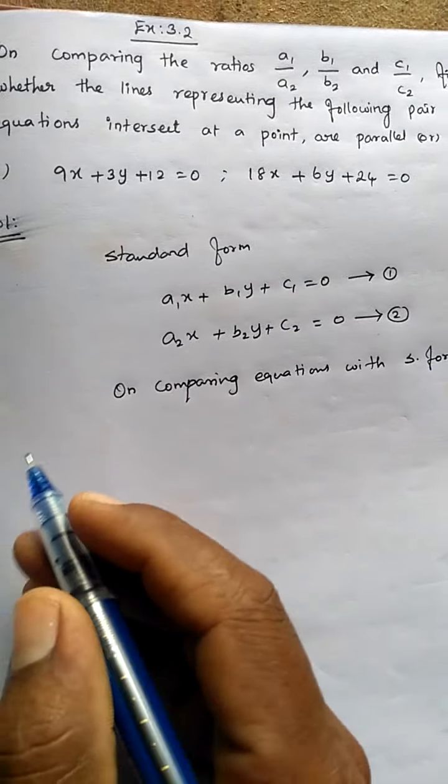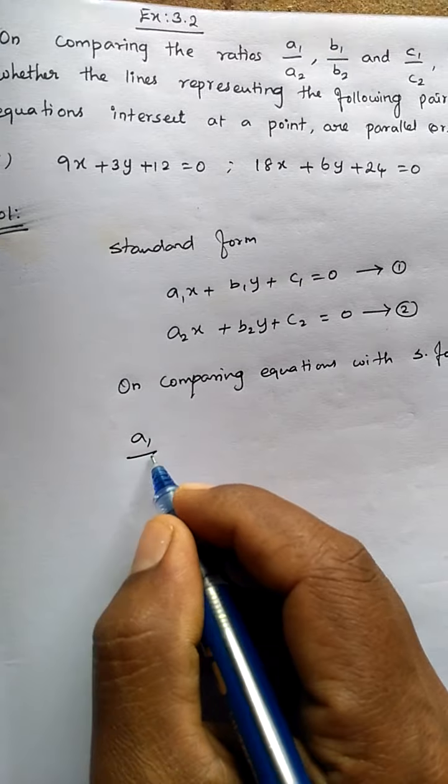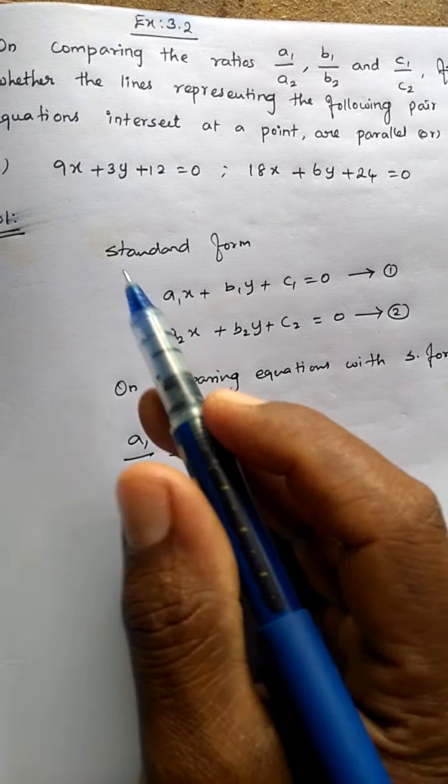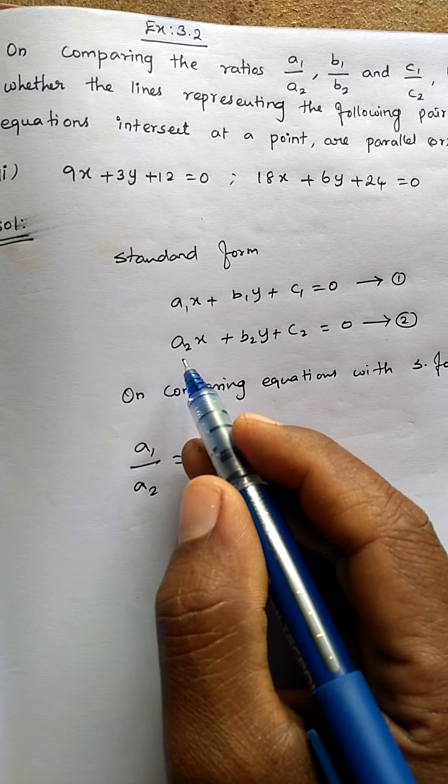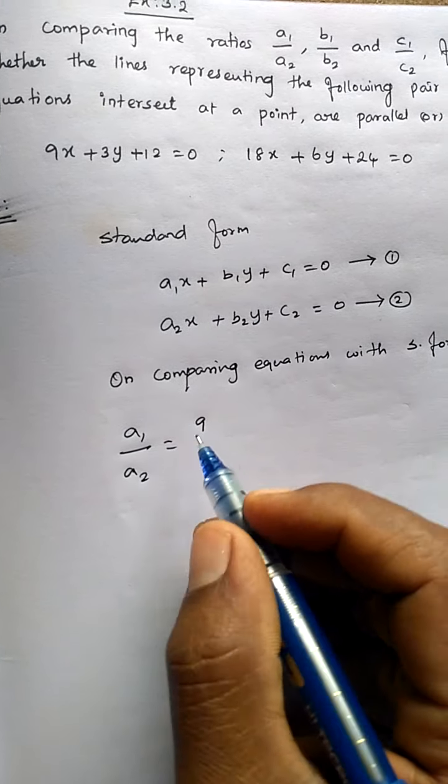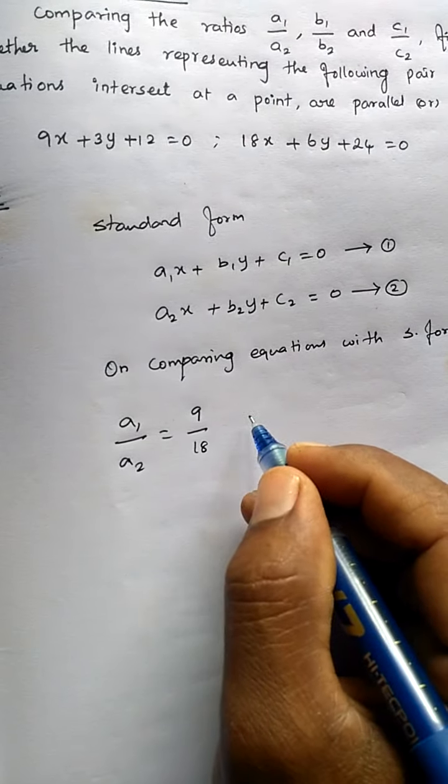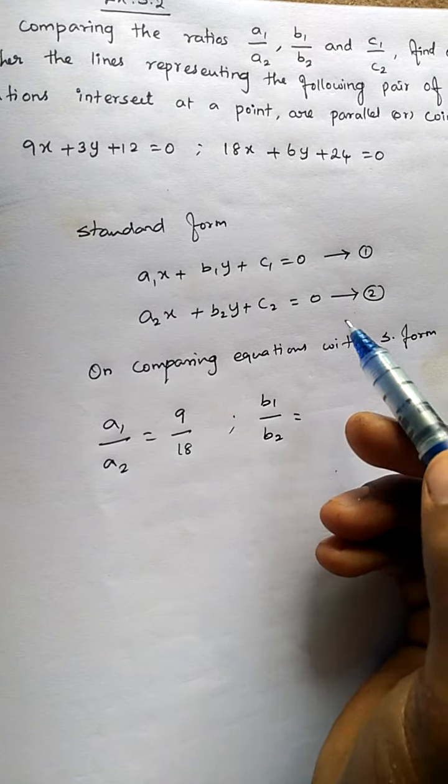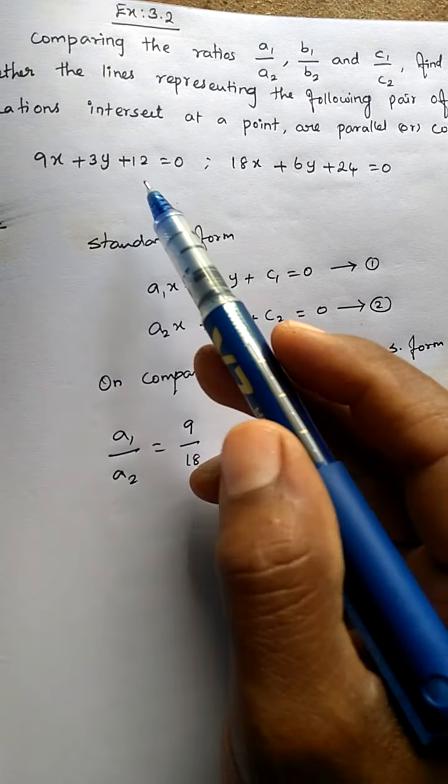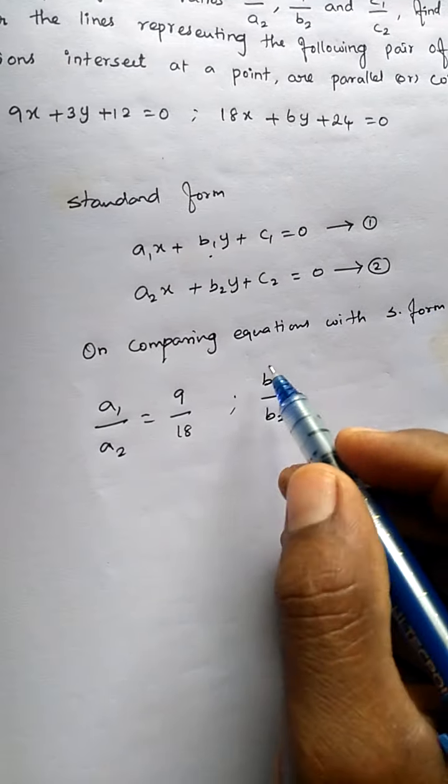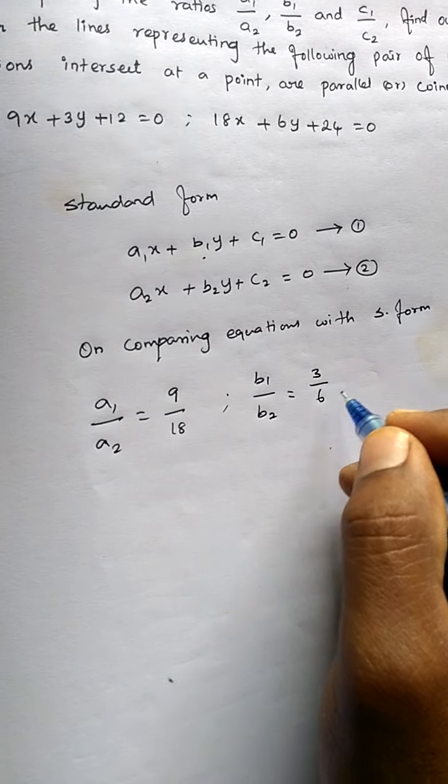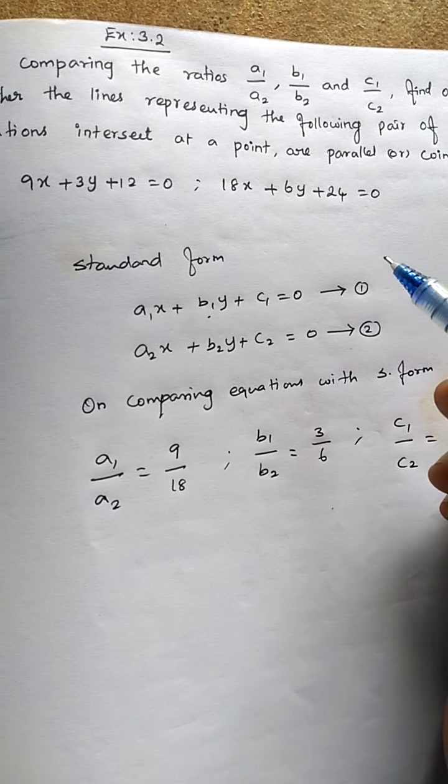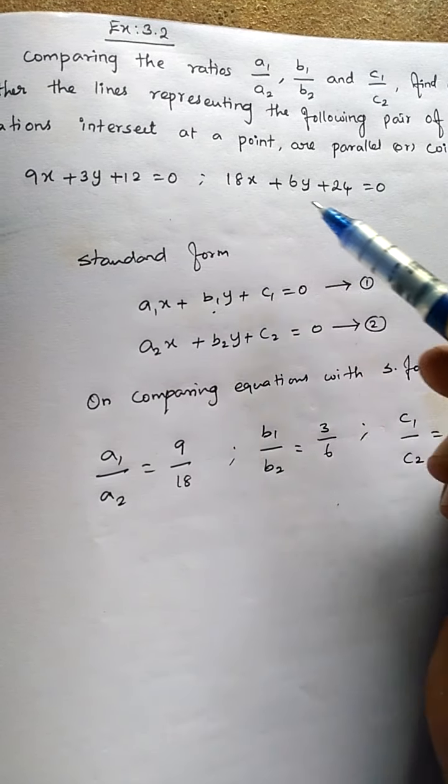Let's apply the ratios directly. a1 by a2, a1 value here we have 9 and a2 in the second equation is 18. Next, b1 by b2 value, b1 value in equation 1 is 3 and here we have 6, so 3 by 6. Next, c1 by c2, constant values 12 and 24.